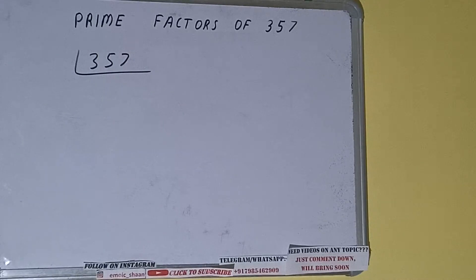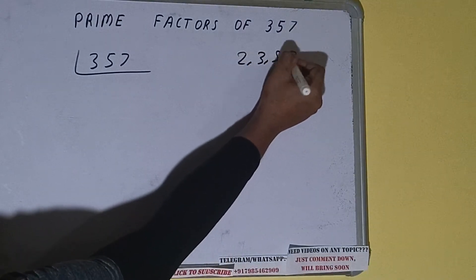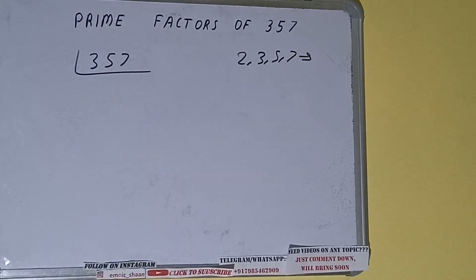The next thing we need to know about is what are prime numbers. So prime numbers are numbers that are divisible by 1 and the number itself, like 2, 3, 5, 7, and so on.